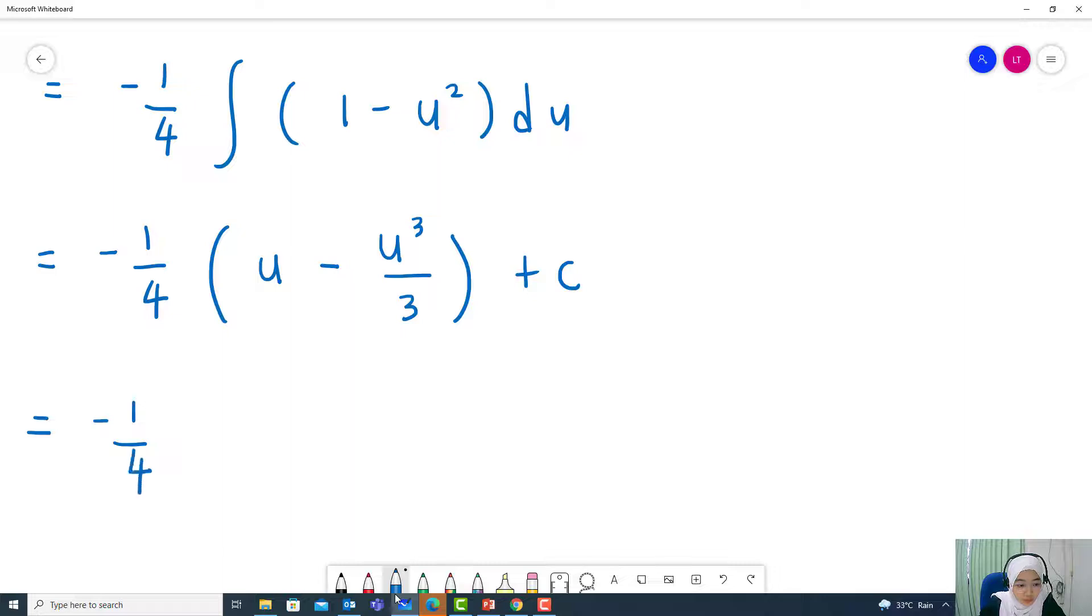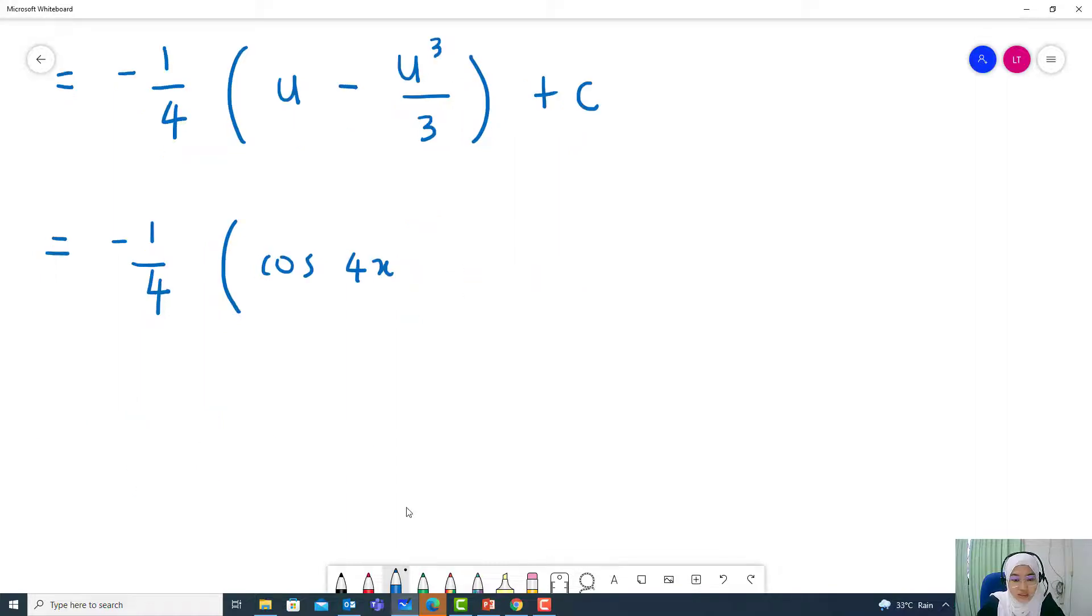Negative 1 over 4. So u is equal to cos 4x. So cos 4x. Integrate u cubed divided by 3 minus cos cubed 4x divided by 3 plus c. And then simplify negative 1 over 4 minus cos 4x plus cos cubed 4x divided by 12 plus c.